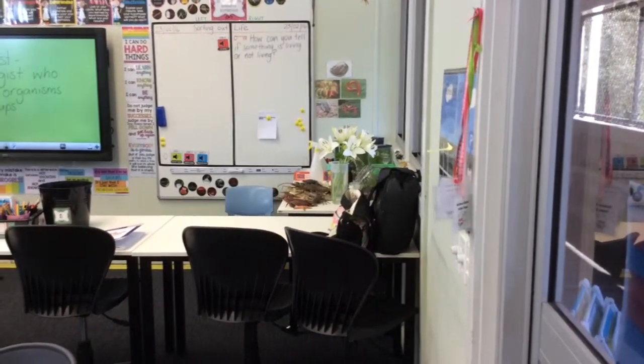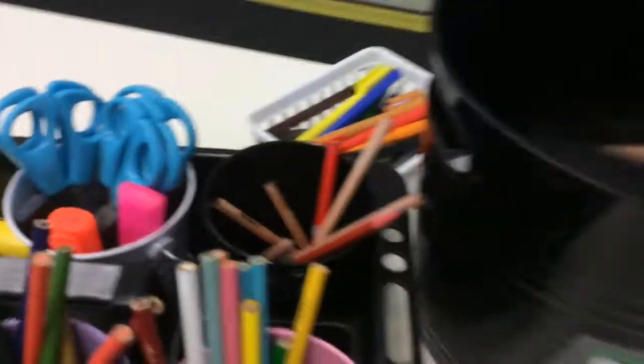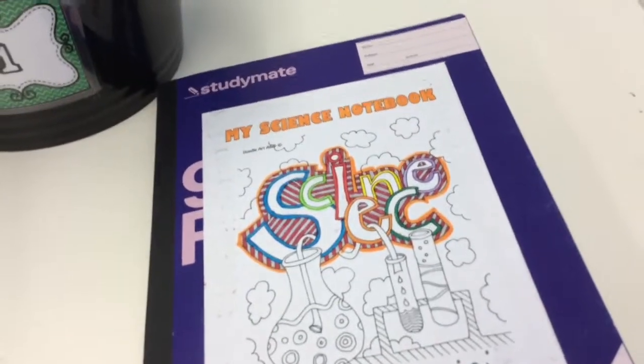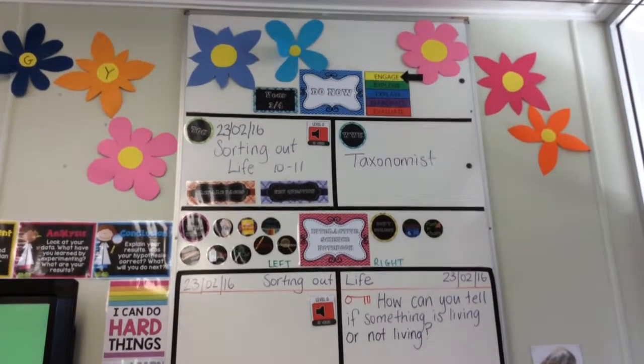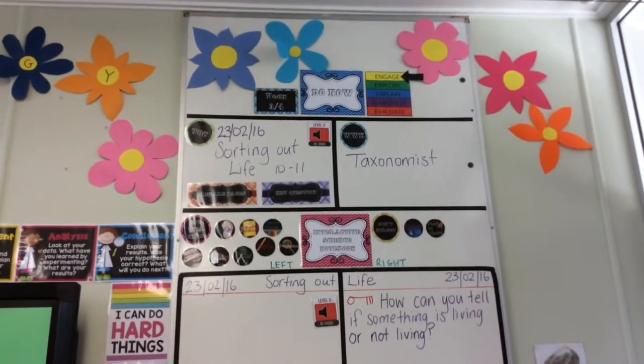This is how we enter the classroom on level zero noise. Once I've got my book and my pencil ready, I'm going to look up to the board to the Do Now section. This is where I will find out everything that I need to do to get my page ready to start the lesson.